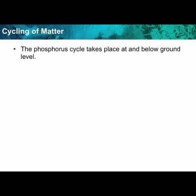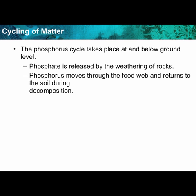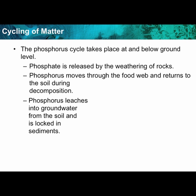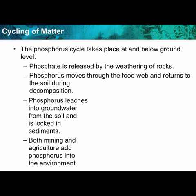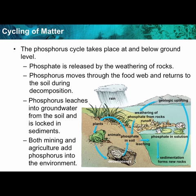The phosphorus cycle takes place at and below ground level. Phosphorus is released by the weathering of rocks, moves through the food chain, and returns to the soil during decomposition — the breakdown of living things back into their nutrients. Phosphorus also leaches into groundwater from soil and can become locked into sediments. Both mining and agriculture can add phosphorus to the environment, and too much phosphorus in lakes and rivers can cause algae blooms. Rain, geological uplifting, and the weathering of rocks put these minerals into the biosphere where they keep cycling — never leaving the earth. Over thousands of years, sediments may form new rocks that are eventually geologically uplifted and brought back into the system.